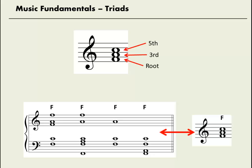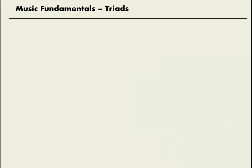There are four different types of triads — we usually call these the four triad qualities: major, minor, diminished, and augmented. Major, minor, and diminished chords are very common. Augmented chords are quite rare, but we'll consider them here along with the others.